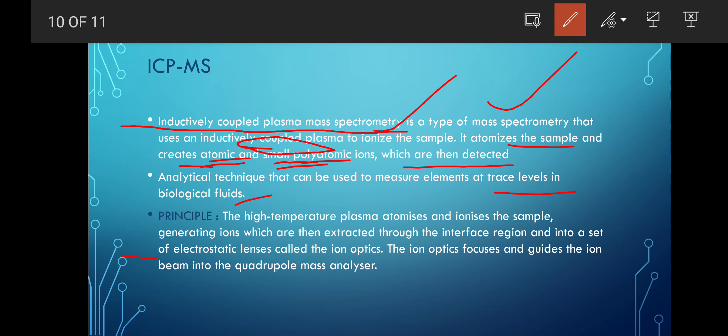The principle is that the high temperature plasma atomizes and ionizes the sample, generating ions which are extracted through an interface region. They are extracted and then guided into electrostatic lenses called ion optics. The ion optics focus and guide the ion beam into the quadrupole mass analyzer. This is the analyzer.